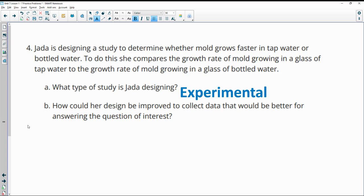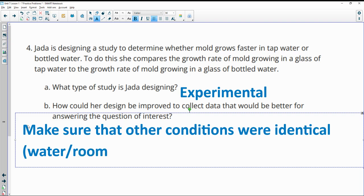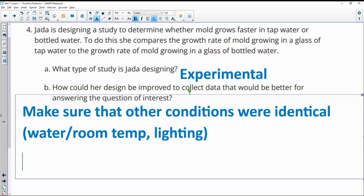And how could she make her study better? She could make sure that other conditions were identical, such as water and room temp, lighting, or whatever we think would impact, but she can put them in identical rooms.